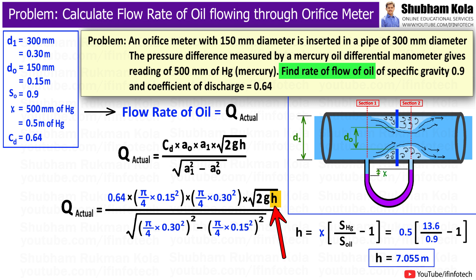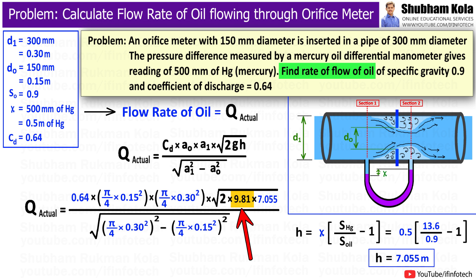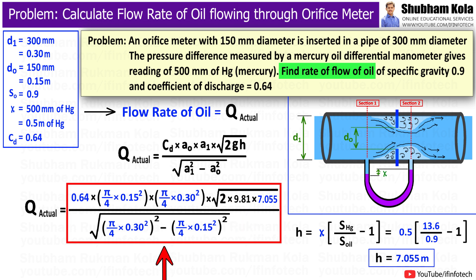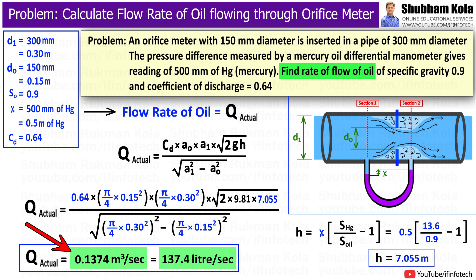Now I will put this calculated value of small h into the discharge formula. Small g is the acceleration due to gravity, that is 9.81. We have now found all the values needed in the discharge formula in order to calculate the discharge of oil. Therefore, by calculating this whole term, we will get the discharge of oil flowing through the pipe.